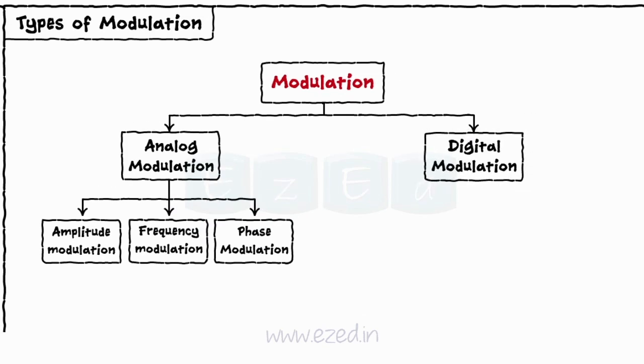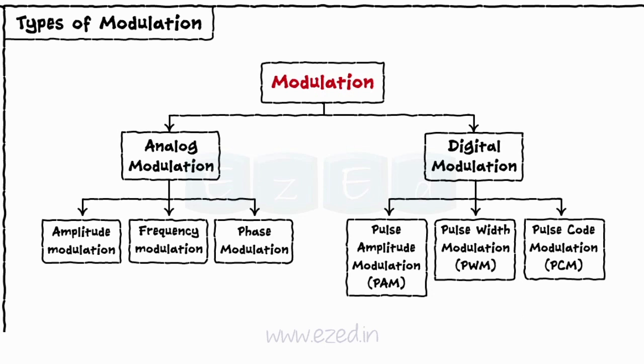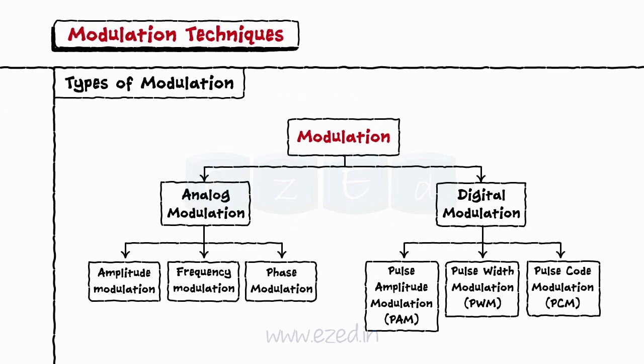Whereas digital modulation is further divided into pulse amplitude modulation, pulse width modulation, and pulse code modulation. We will only focus on analog modulation.